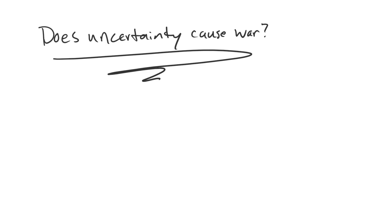Unfortunately, the relationship is actually much murkier. We can't really draw that sort of conclusion. This lecture is geared toward understanding why. The short answer is that if we really want to understand whether uncertainty causes war, we need to formalize a true comparative static and then see whether the probability of war goes up or down. When we do that, the standard idea that uncertainty causes war falls apart.